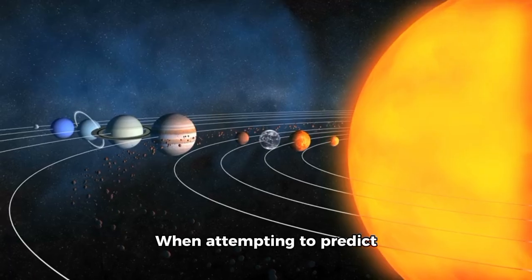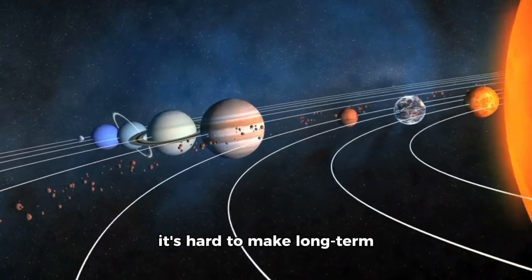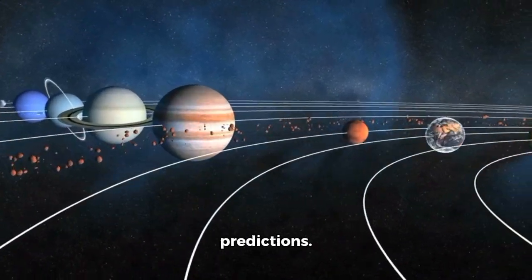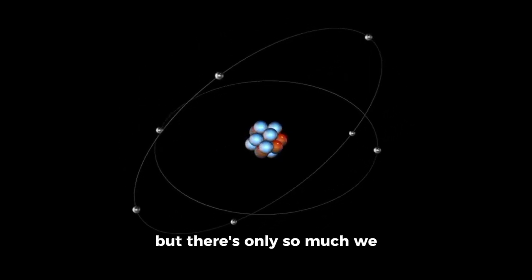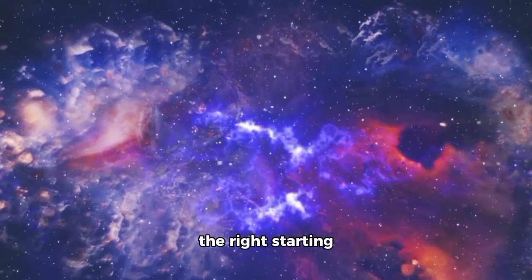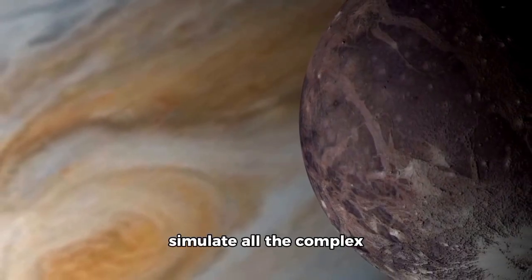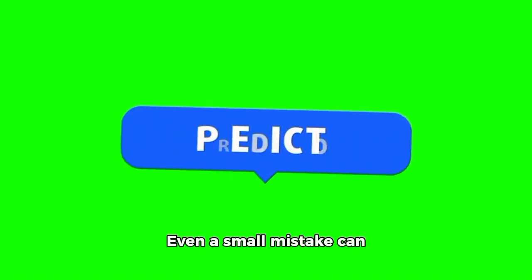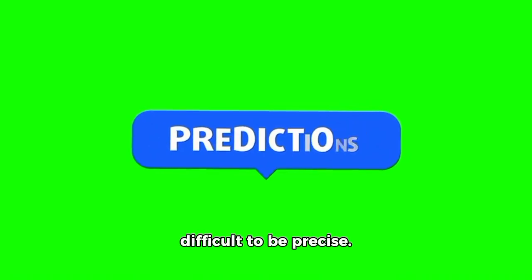This means that, even though it appears chaotic, there is an order to how Pluto moves around the Sun. When attempting to predict what will happen to planets with orbits like Pluto's, it's hard to make long-term predictions. Scientists can use accurate models to estimate where orbits will eventually go, but there's only so much we can know for sure. These models depend on having the right starting information and being able to simulate all the complex factors that influence orbits. Even a small mistake can significantly alter predictions, making it difficult to be precise.